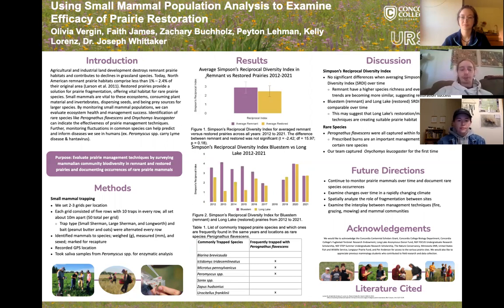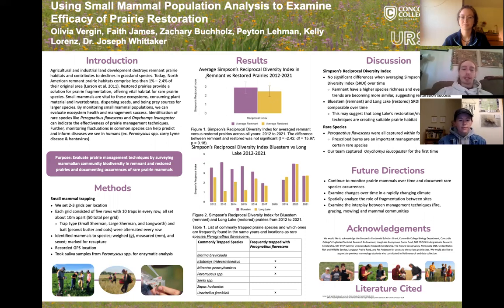To do this, we started out by setting two to three grids per location. Each grid consisted of five rows with 10 traps in each row, all set about 10 meters apart. Trap types varied between small Sherman, large Sherman, and Longworth traps. Each trap was baited with either peanut butter, oats, or a mix of peanut butter and oats, alternated every row.